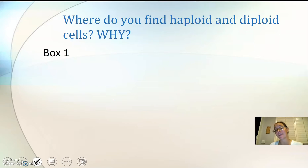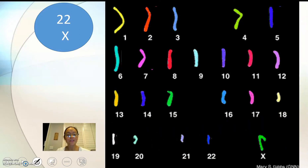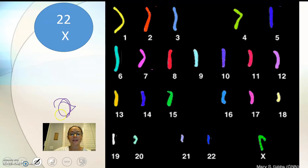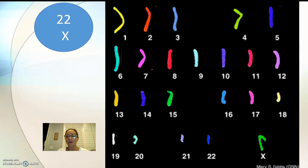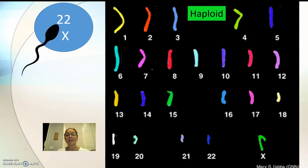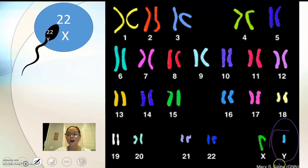There's your box one: where do you find haploid and diploid cells, and why? Now let's look at what we call a karyotype. Here I have chromosomes 1 through 22, plus an X chromosome — these would be the chromosomes found in an egg. This would be N equals 23. When the sperm fertilizes the egg and brings the second set, the sperm also has chromosomes 1 through 22 plus a sex chromosome. This Y chromosome is called a sex chromosome.